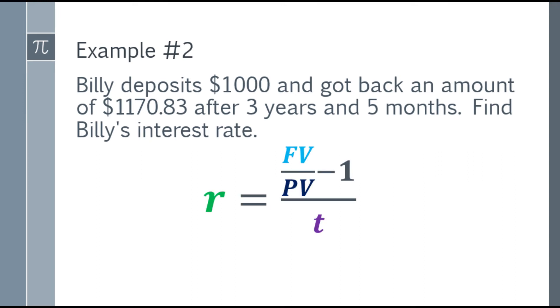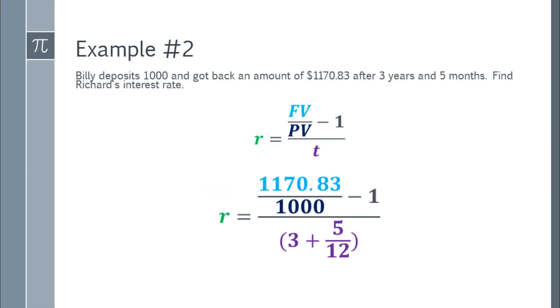For this one, let's place the formula. Next, we substitute. The FV, the future value, will be $1,170.83. The present value is the initial amount deposited, which is $1,000. Then that answer, we minus by 1.